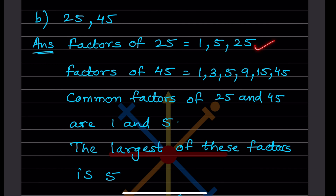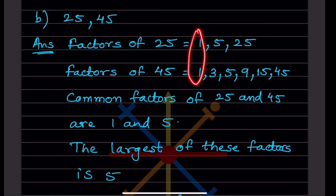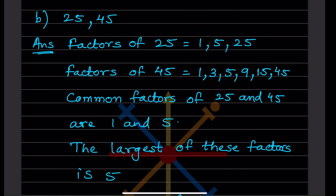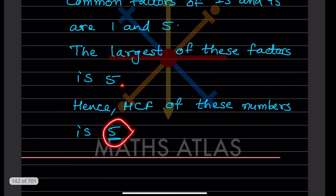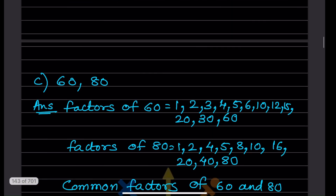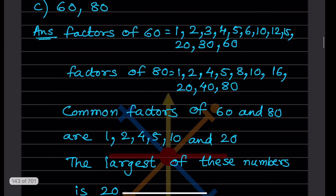Now for 25 and 45: the factors of 25 are 1, 5, and 25. The factors of 45 include 1, 3, 5, 9, 15, and 45. The common factors are 1 and 5. The highest number among these common factors is 5. So the HCF of 25 and 45 is 5.